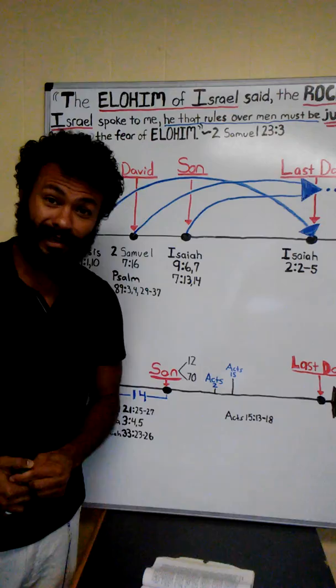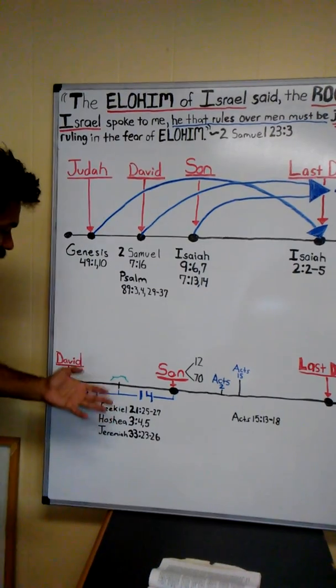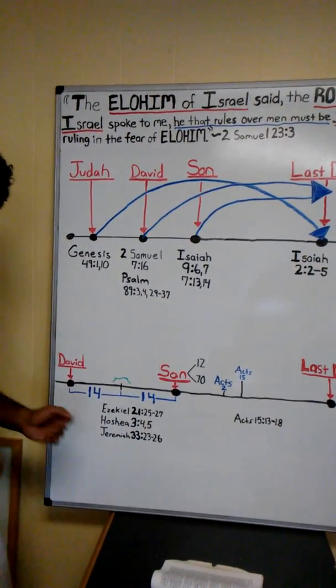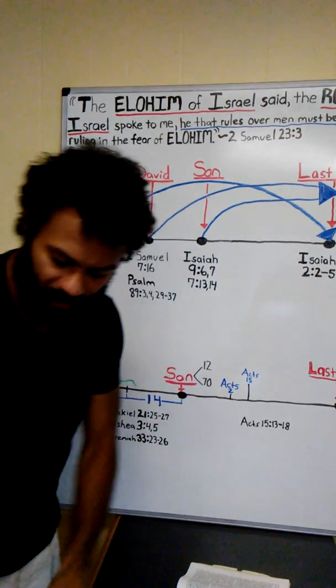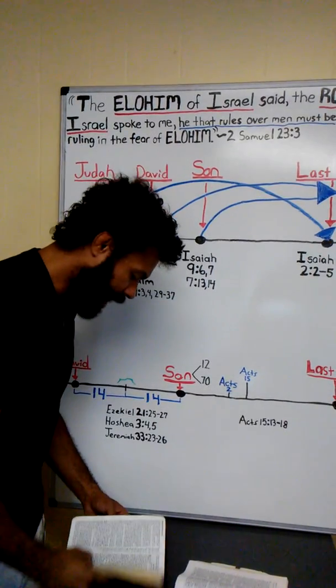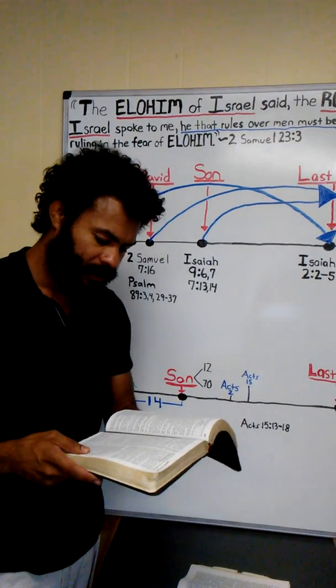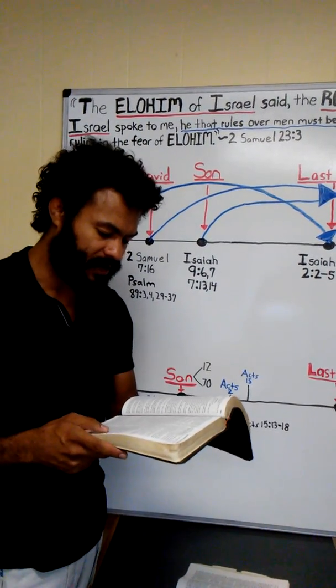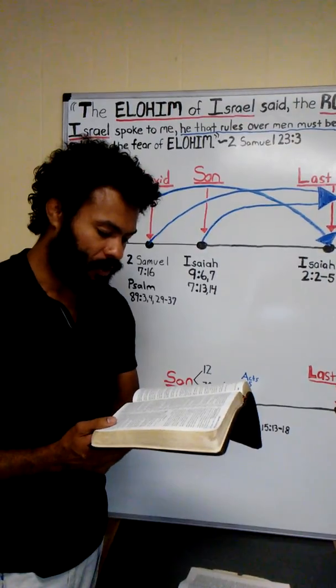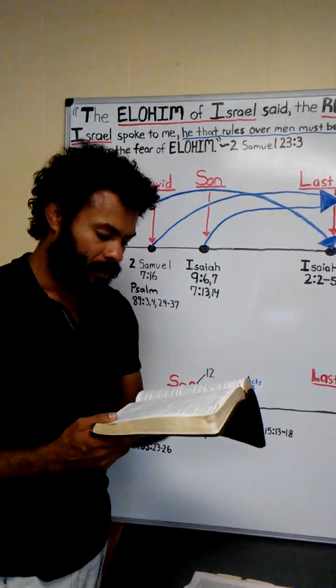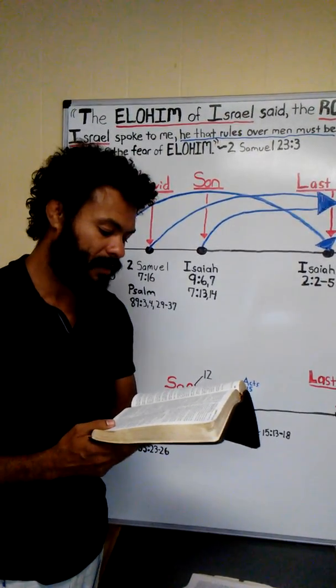How is this prophecy of David ruling forever going to ever happen? It looks impossible. They're just doomed after being sent into exile to Babylonian captivity. We read about this in Ezekiel chapter 21, verses 25 through 27: O thou profane wicked prince of Israel, whose day is come when iniquity shall have end. Thus says Yahuwah Elohim, Remove thy diadem, and take off the crown. This shall not be the same. Exalt him that is low, and abase him that is high.